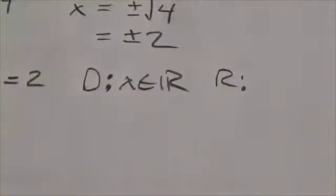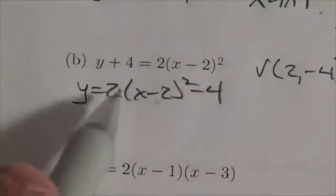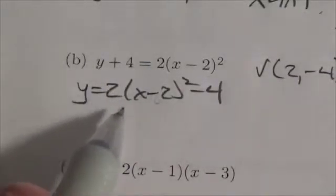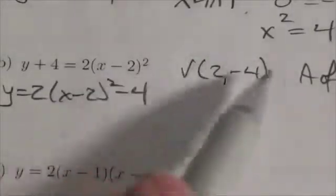And our range, well now I've got to take a look at the function again. Our function here has got a positive stretch here, which means the parabola is going to open up and the vertex is 2, negative 4. And because it opens up, I know this will be a minimum. So because it's a minimum, our range here will be y is greater than or equal to negative 4.